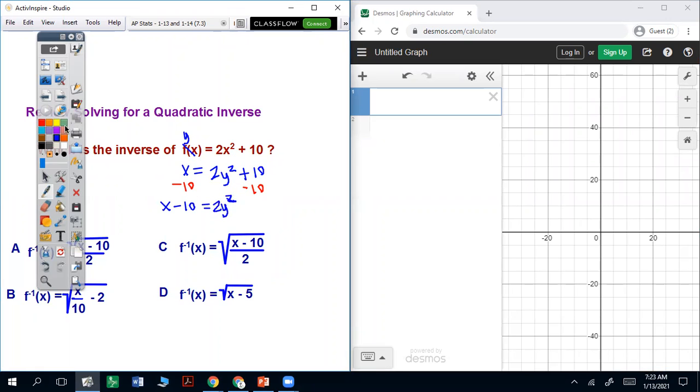The next thing we want to do is divide by that 2 up front. So we're going to divide all sides by 2. And that's going to give you y squared equals x minus 10 over 2.